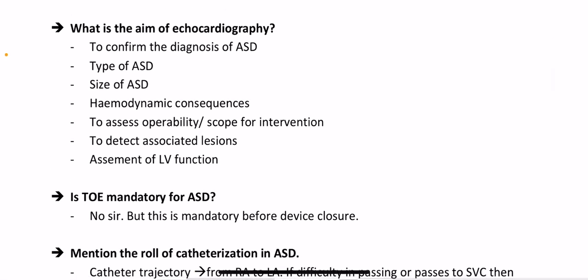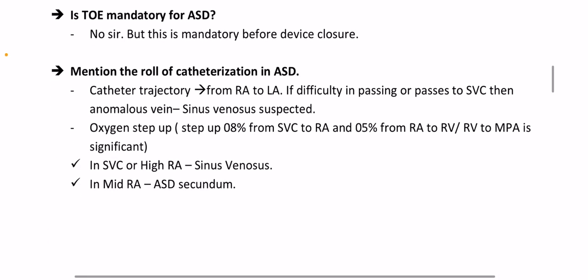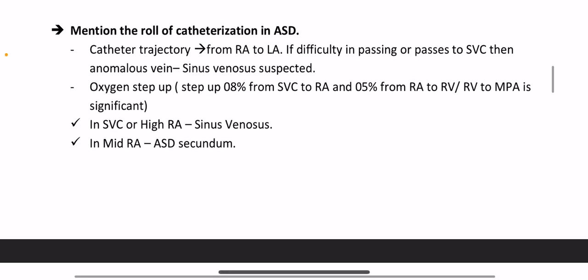What is the aim of echocardiography in ASD? To confirm the diagnosis; determine the type and size of ASD; assess hemodynamic consequences; assess operability and scope for intervention; detect associated lesions; and assess LV function. Is transesophageal echo mandatory for ASD? Not routinely, but it is mandatory before device closure.